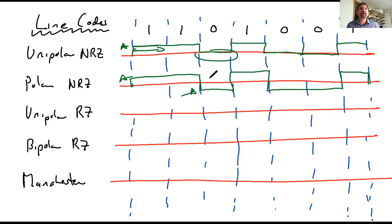So now, unipolar RZ, the way this works is it also goes A, but not all the way. At some point, it goes down to 0. Another 1 goes up to A, down to 0. And 0 remains 0. A, and 0 for remainder of the cycle. 0, and then A goes down.